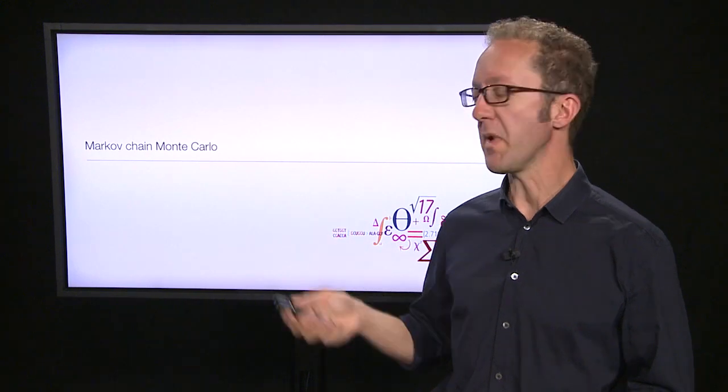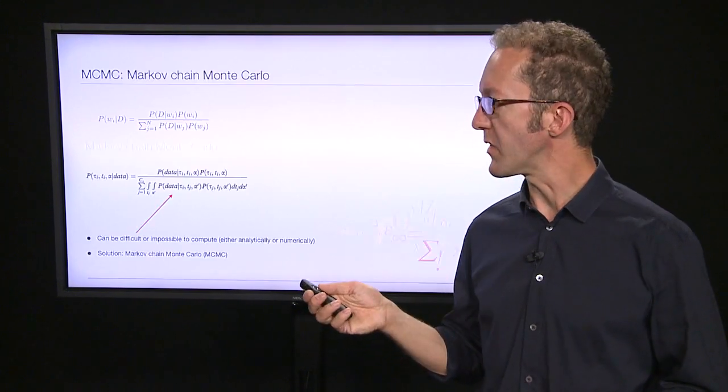Bayesian statistics has really gained influence in the last 10 or 20 years, largely because prior to that, many of the computations needed to do Bayesian statistics were very hard or even impossible to do. I'm going to mention some aspects of that in this part of the talk on a method called Markov Chain Monte Carlo, or MCMC.